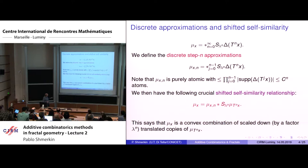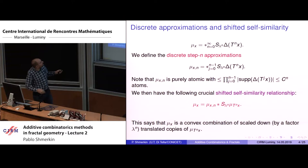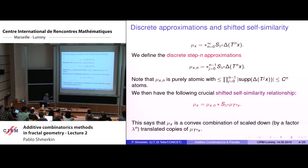Because each of these measures has at most C atoms, and the support of the convolution is the arithmetic sum of the supports, the discrete approximation has at most C^n atoms. If we decompose this infinite convolution into the first n terms and the remaining terms, we get a self-similar relationship. The measure mu_x is a convex combination of scaled copies — scaled by lambda^n — of the measure corresponding to another parameter in the group given by the dynamics.